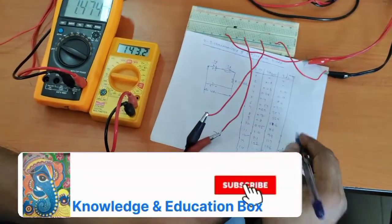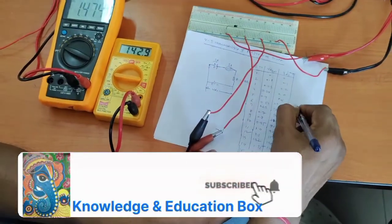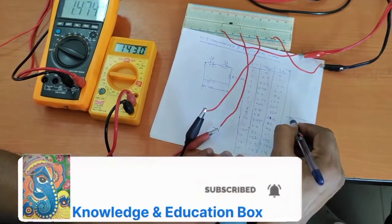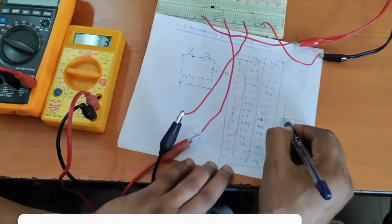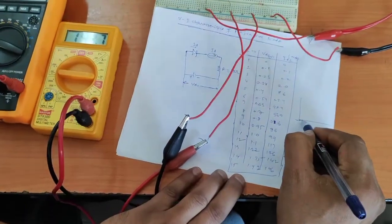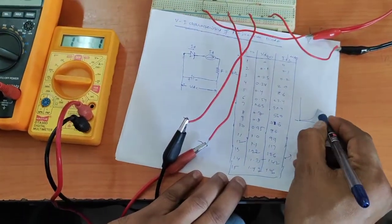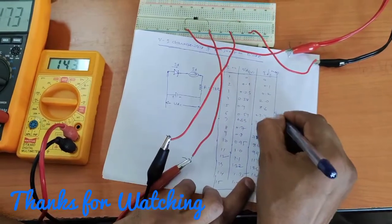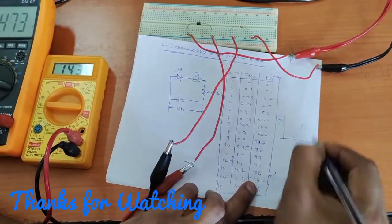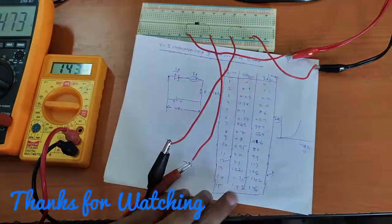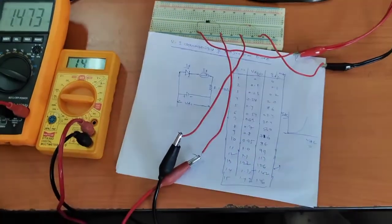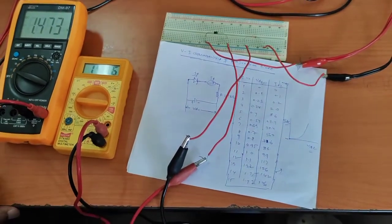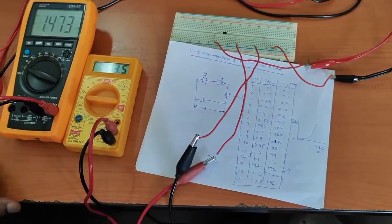The graph will be plotted and it will be exponential in nature — it should come like this. The X-axis is VDC and the Y-axis is IDC. This is the diode V-I characteristics we have been studying. Thank you.